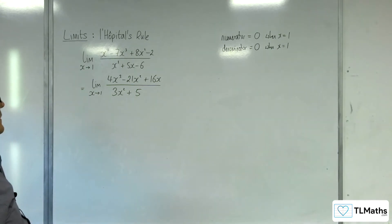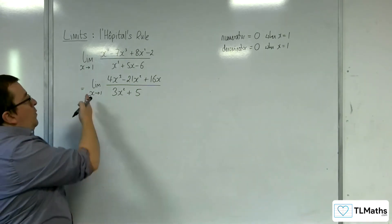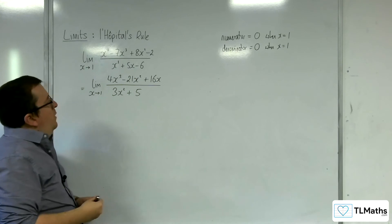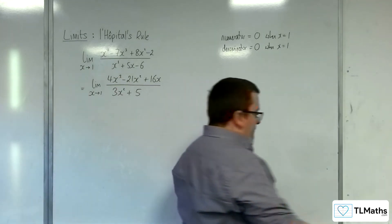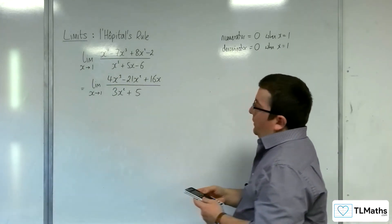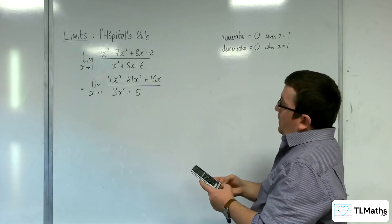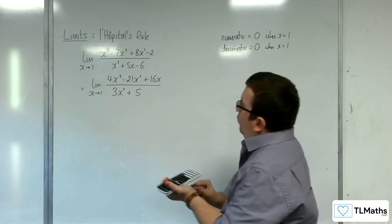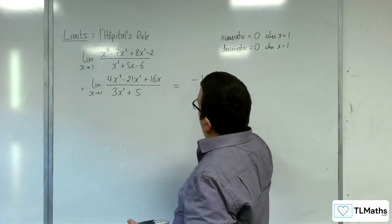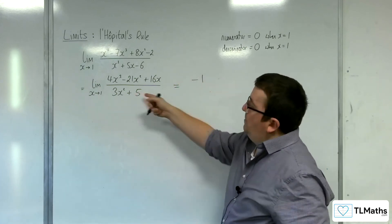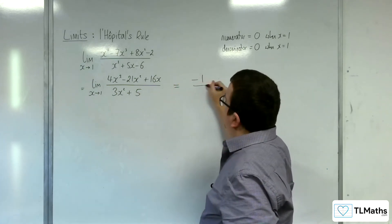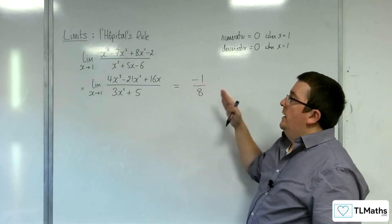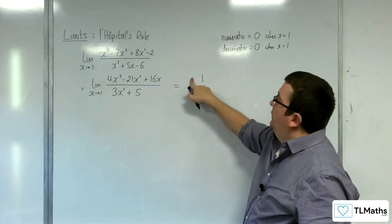So now, what happens as x tends to 1? The numerator goes to 4 take away 21 plus 16, which is minus 1. And the denominator is 3 plus 5, which is 8. So the limit as x tends to 1 is minus 1 eighth.